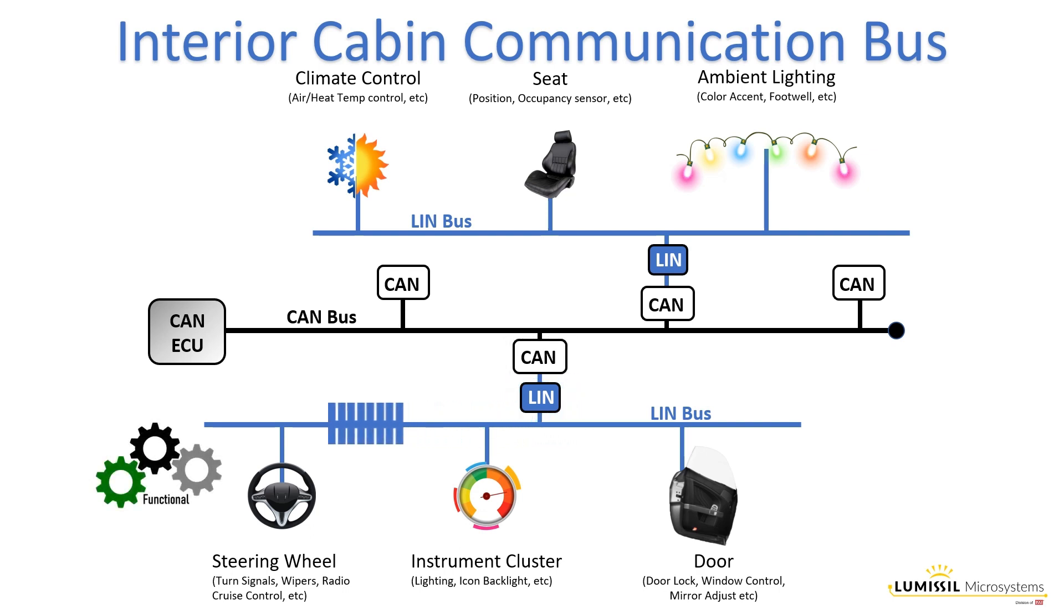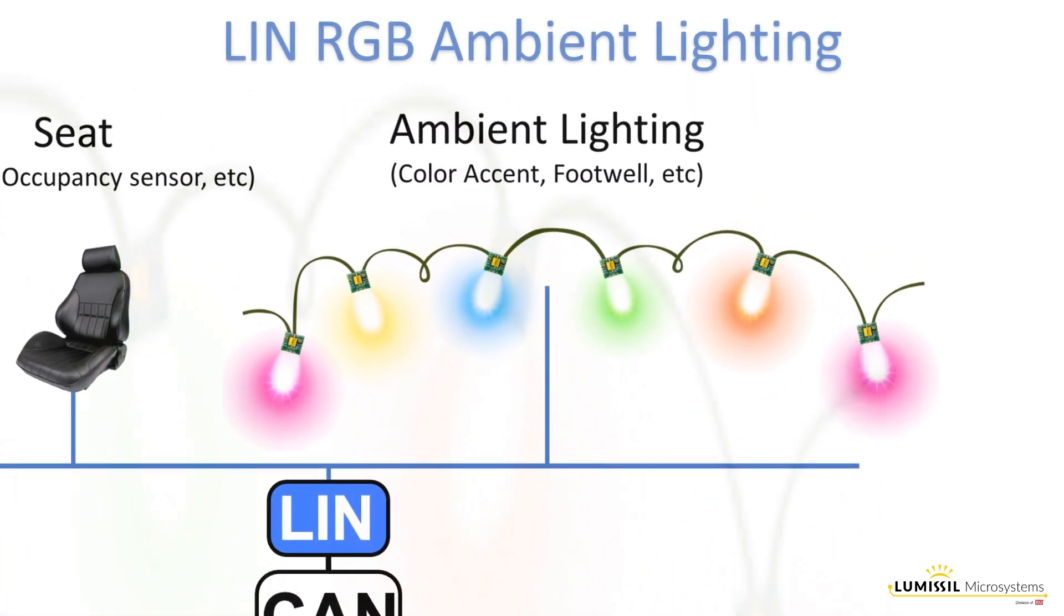Applications that don't require a fast response. For example, functional applications can include steering wheel, instrument cluster, and door functions. Other ECU commands can be for comfort-related applications such as climate control, seat adjustments, and ambient lighting. For this video we will focus on LIN RGB ambient lighting.